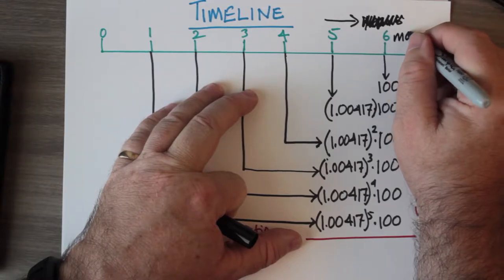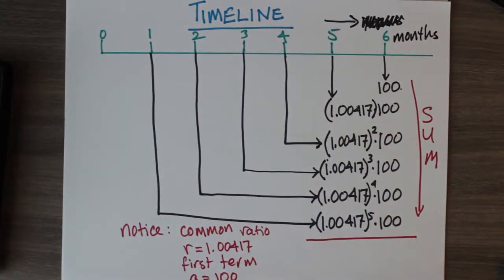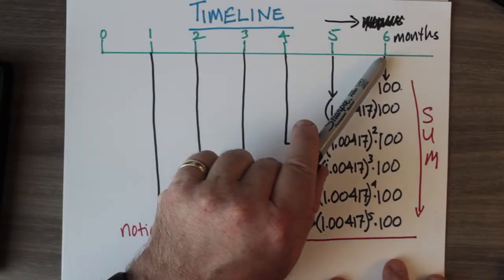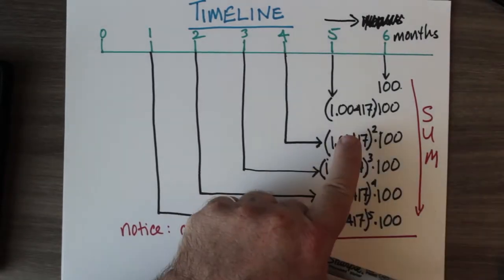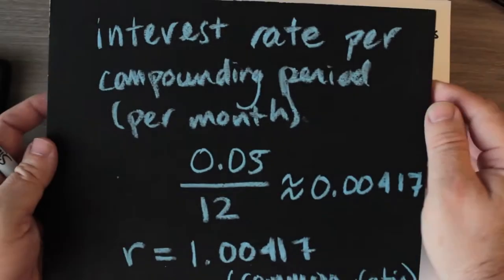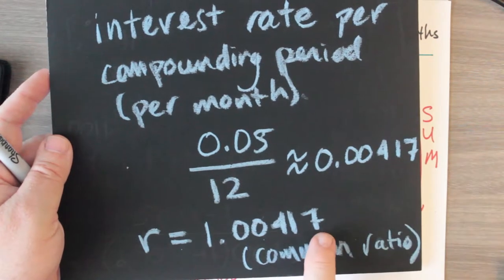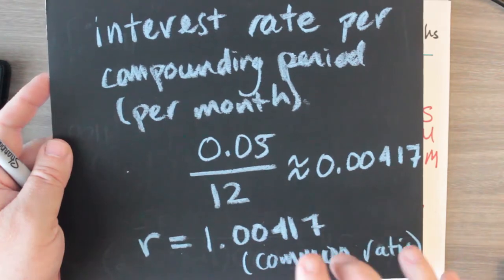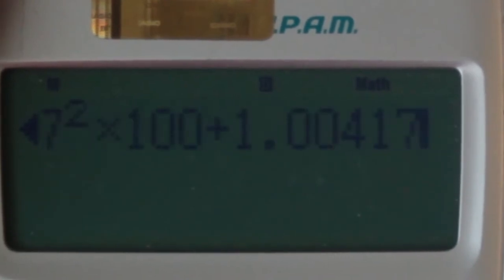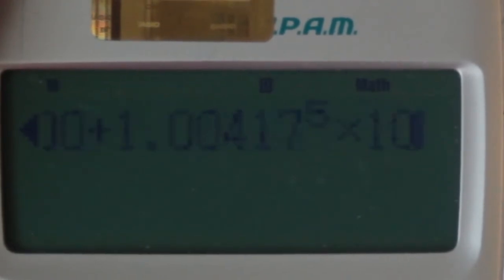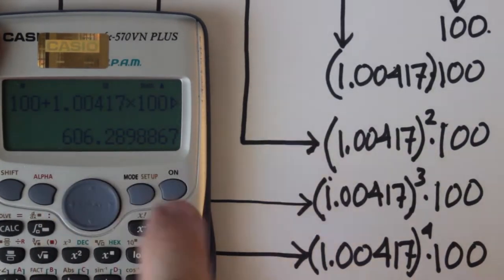The idea is to find the sum of this column. Notice that the last term is 100. It's the simplest term, and if we work backwards, we can call that the first term. Notice that every successive term working backwards is bigger than the last one by a factor of 1.00417, so we can call that the common ratio. It would also be a good idea to see what this looks like on a calculator. Now we can see the sum of the series, expressed in dollars and cents, to be $606.29.